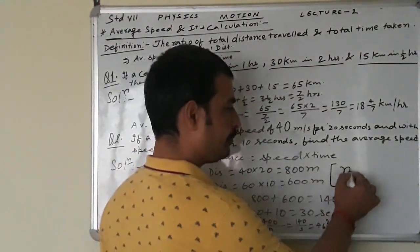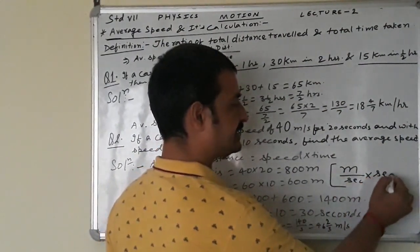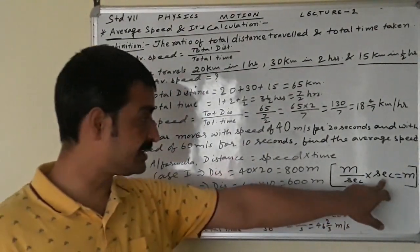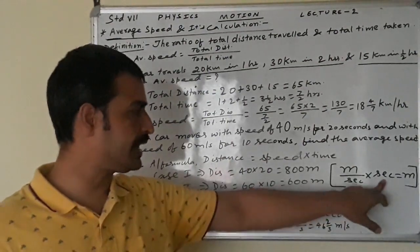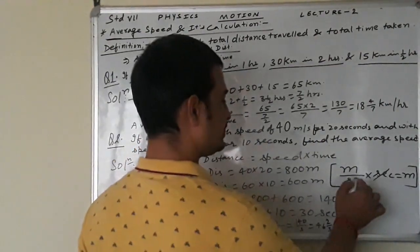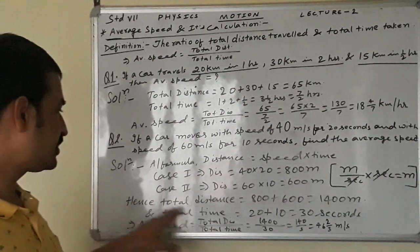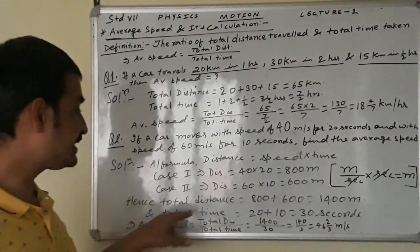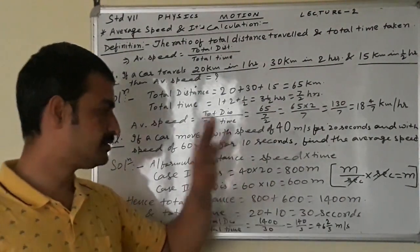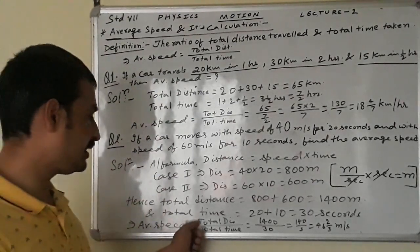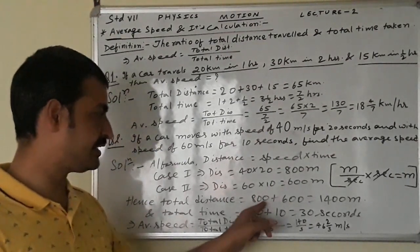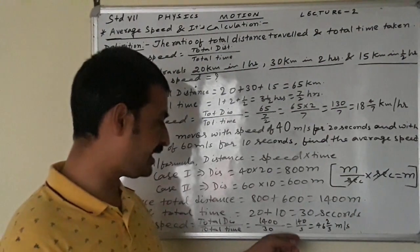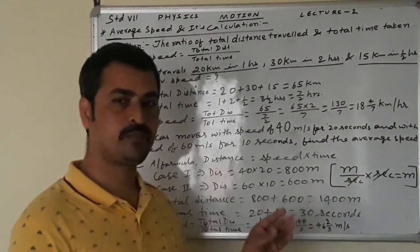Note that meter per second multiplied by second gives only meter, since seconds cancel out and meter remains as the unit. Total distance equals 800 plus 600, which is 1400 meters. So average speed equals total distance by total time: 1400 meters divided by 30 seconds equals 1400 by 30, that is 140 by 3, or 46 and 2/3 meter per second.